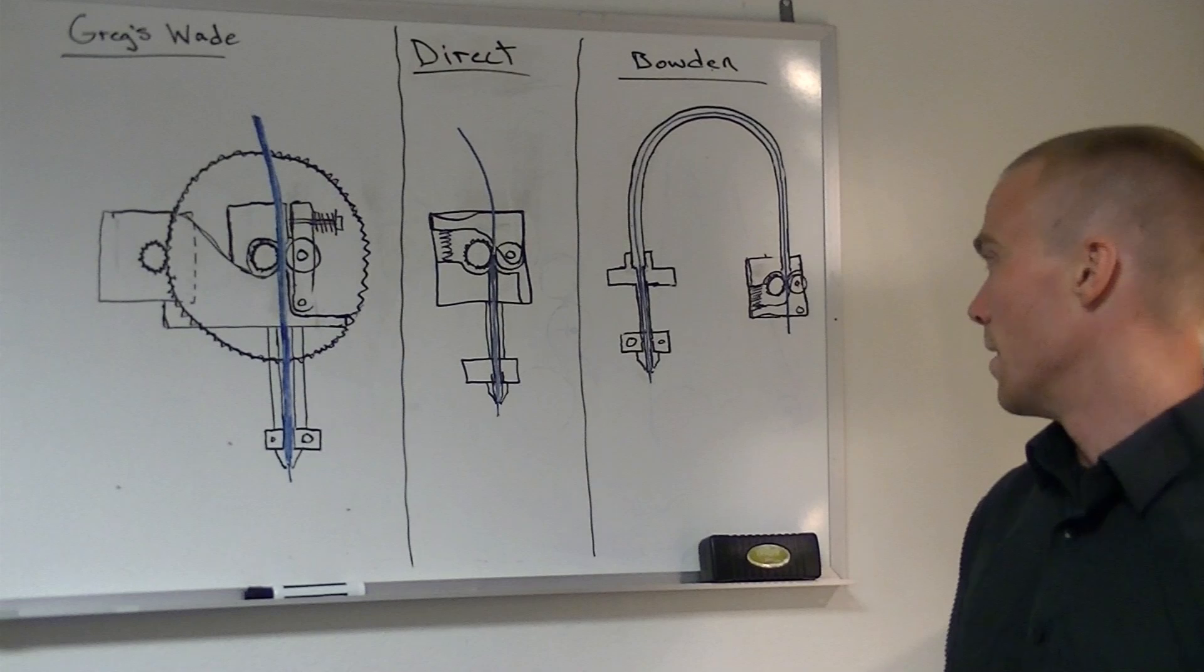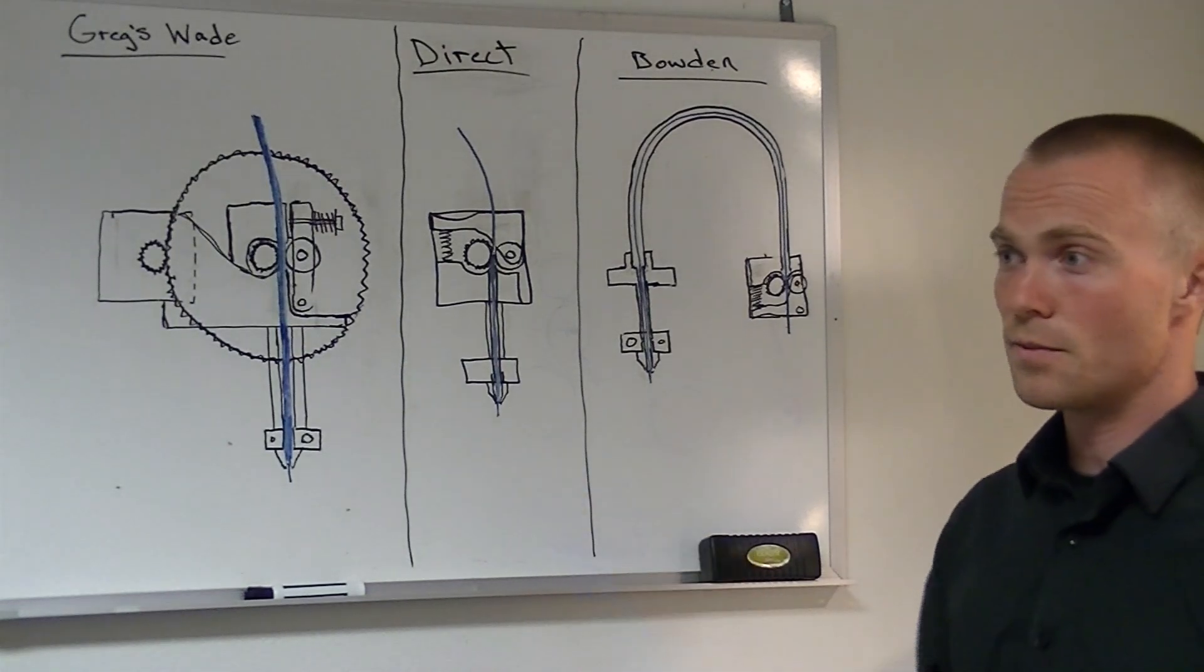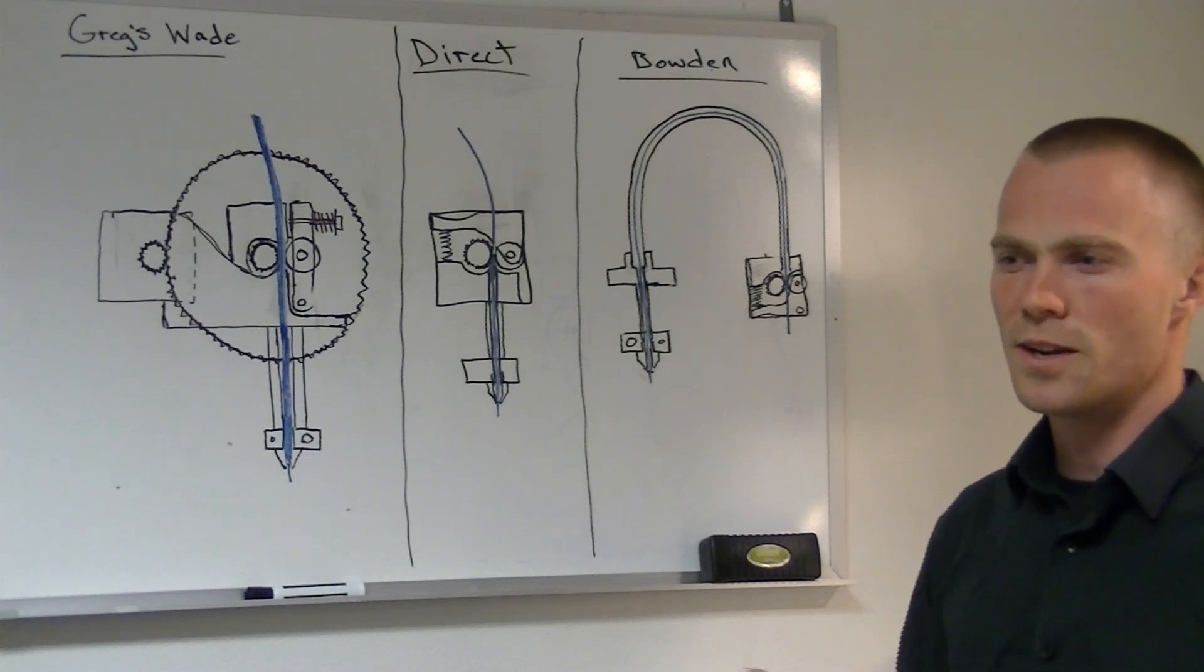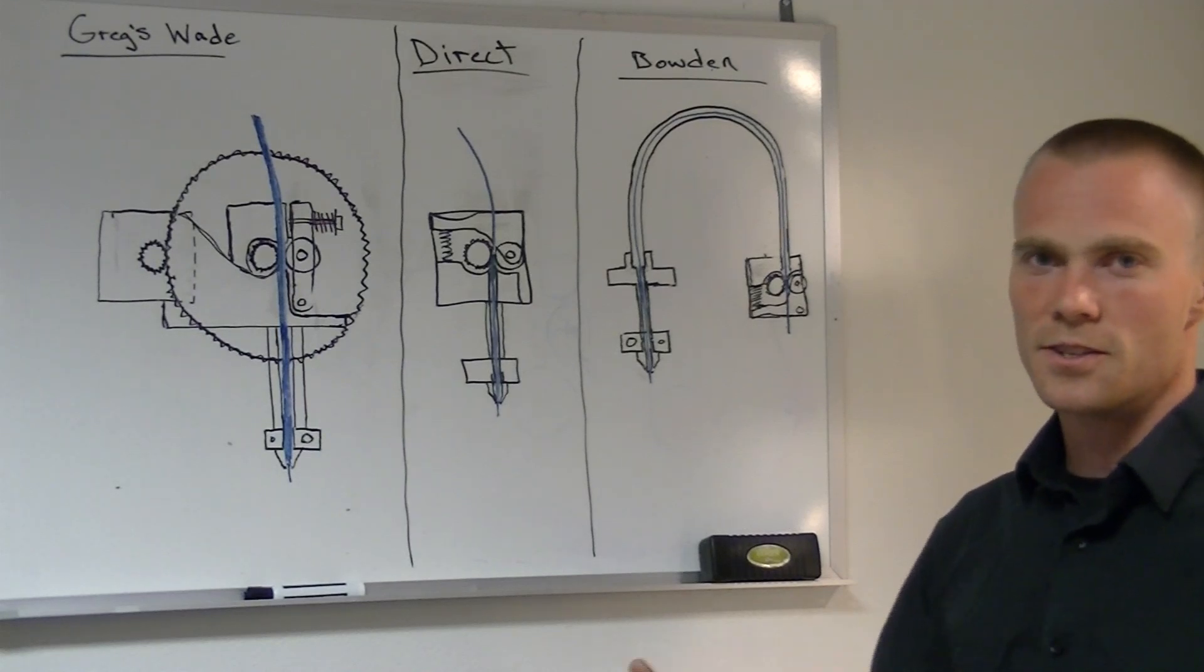And then Bowden extruders, which you'll see on both 1.75 and 3, but in a lot of cases these are on Delta style printers or others where you're trying to reduce the inertia of the printhead.